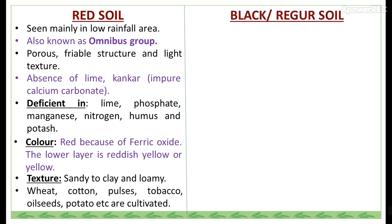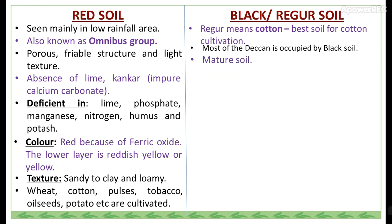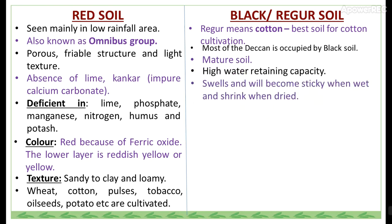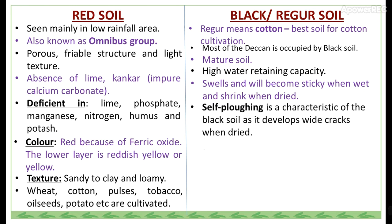Black soil is also called regur soil, where regur means cotton. It is the best soil for cotton cultivation. Most of the Deccan is occupied by black soil. It is a mature soil with high water-retaining capacity. Black soil swells and becomes sticky when wet, whereas it shrinks when dried. Self-plowing is a characteristic of black soil as it develops wide cracks when dried.